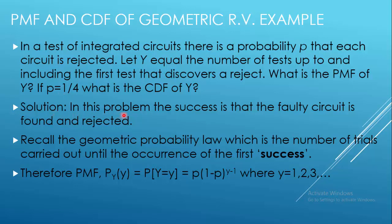In this problem, success is that the faulty circuit is found and rejected. This is clearly a problem of geometric probability, because the geometric probability law gives the number of trials carried out until the occurrence of the first success. The PMF for Geometric(1) is P(Y=y) = P · (1−P)^(y−1).